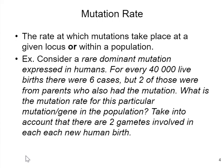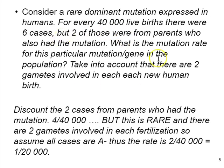Here's a problem to help make sure you understand mutation rate. Consider a rare dominant mutation expressed in humans: if you have big A, you have the condition; if you're little a, little a, you do not. Let's say that for every 40,000 live births, there are six cases in a particular population, but two of those were from parents who also had the mutation. We ask: what is the mutation rate for this gene in the population? We remember that for every new human birth, two gametes fused.